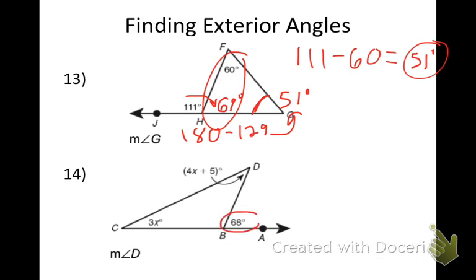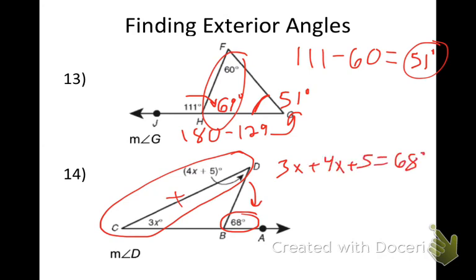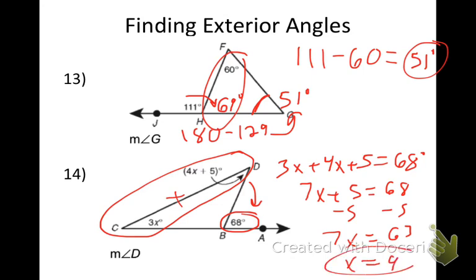Same thing here on 14. If the outside angle is 68, what can I do with these two inside angles, Claire? Add them and set them equal to 68. So, 3X plus 4X plus 5 equals 68 degrees. That gives me 7X plus 5 equals 68. Subtract 5, 7X equals 63. End up with X equals 9. I plug that back in to find angle D. 9 times 4 is 36 plus 5. I get an angle of 41 degrees. So there's ways I can find those angles.